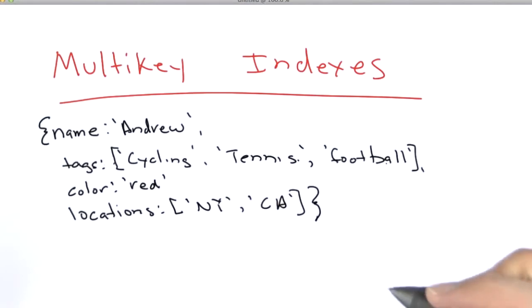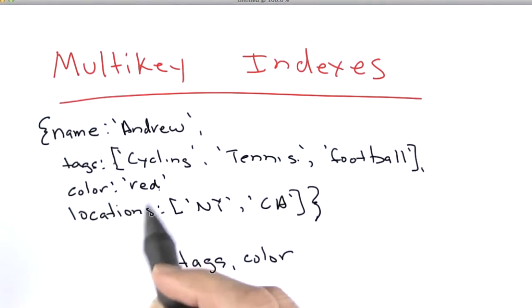Now there are some other restrictions on multi-key indexes. For instance, you can create a compound index on tags comma color, because only one of those two is an array. And the other one, in this case, is a scalar.